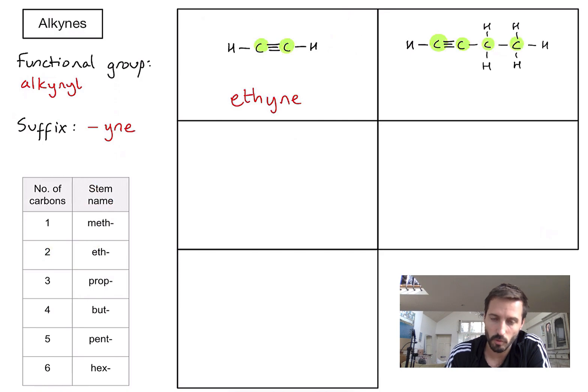I've got one, two, three, four. Four carbons relates to the stem name bute. So let's write down bute.